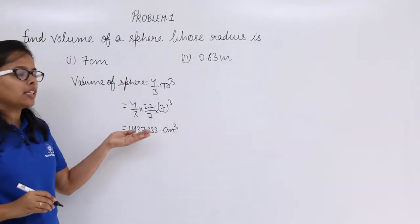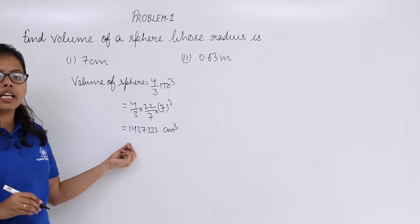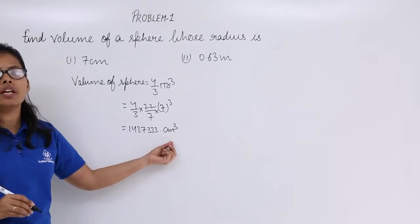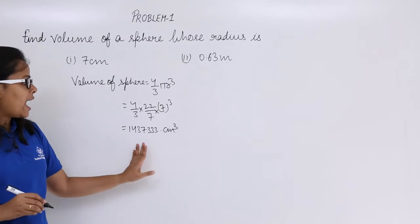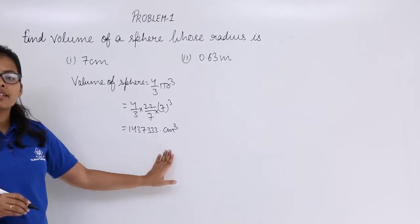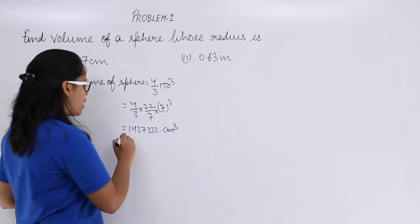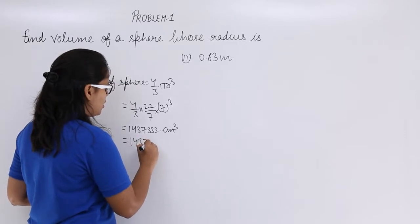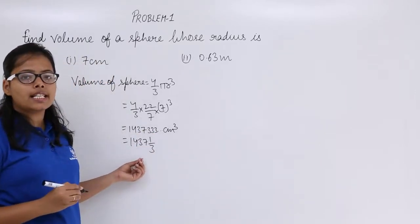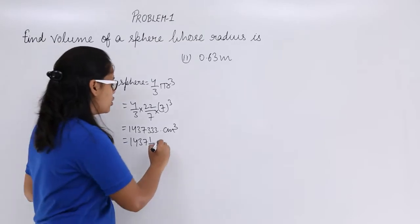After evaluating this expression you will be getting 1437.3333 centimeter cube. As after decimal you are getting 333, so what you can write it as? You can write this as 1437 and 1 by 3 centimeter cube.